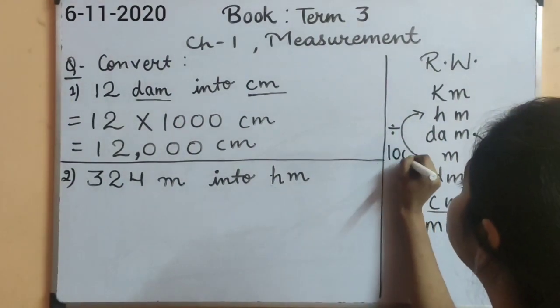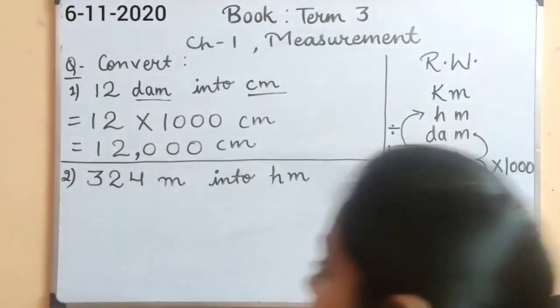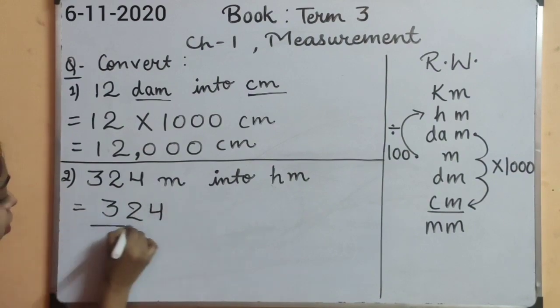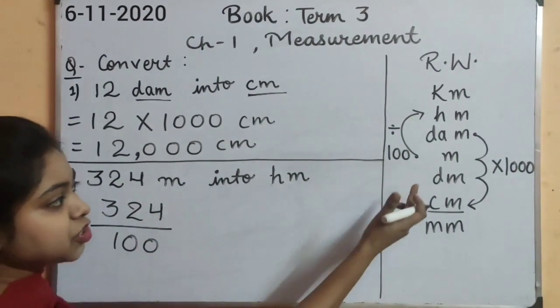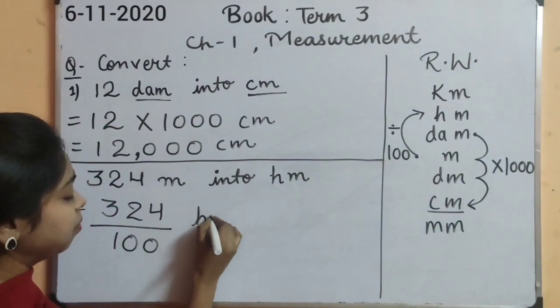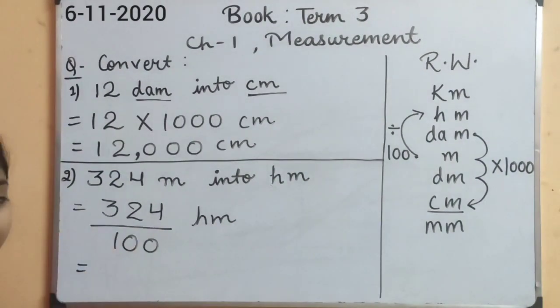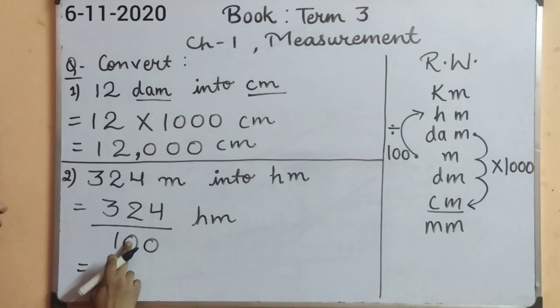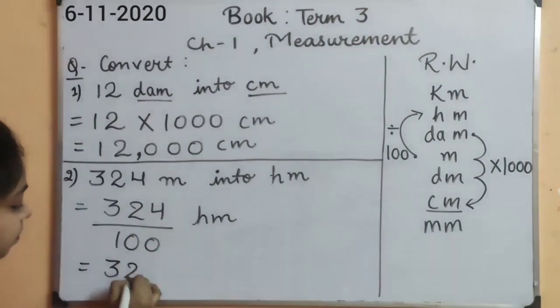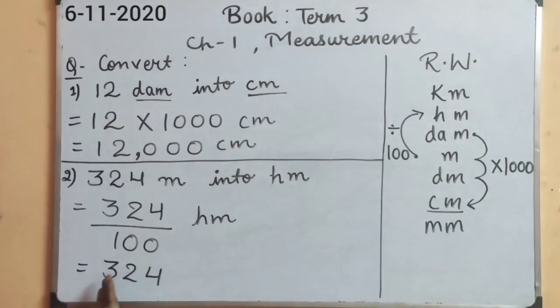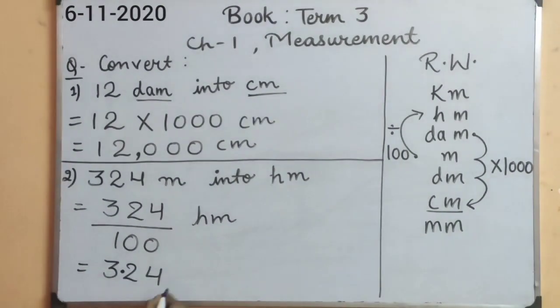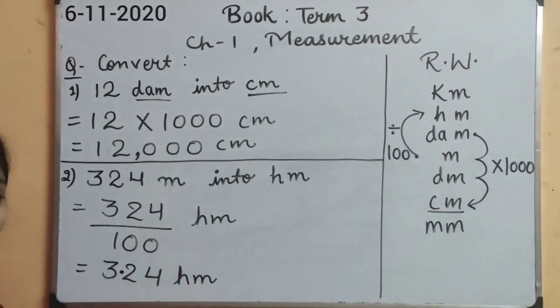So we will divide it by hundred. Let's divide our number by hundred. Three hundred twenty-four divided by hundred, and the unit will be changed to hectometer. As there are only two zeros, in the given number we will put the decimal after two digits. One, two. And here the decimal will come. So three point two four hectometer.